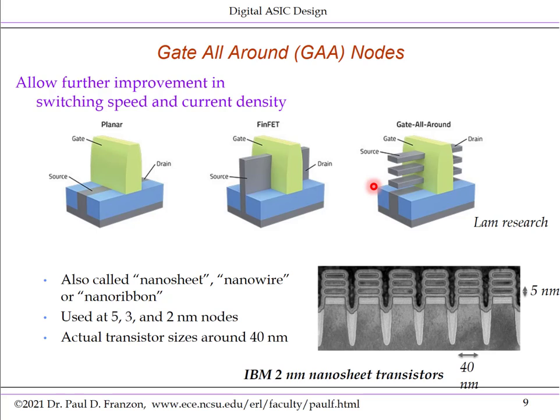This leads to a further increase in current density, performance, and potential power savings — an improvement equivalent to a nodal improvement. These are used particularly at the 3 and 2nm nodes; the 2nm node is just starting to come out. There are multiple names for these structures: gate all-around is the official name, but they're sometimes called nanosheet, nanowire, or nanoribbon transistors because the channels are sheets or ribbons passing through the gate.